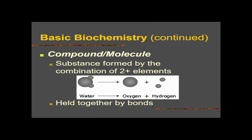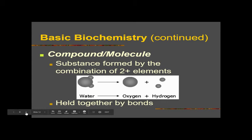Now we can combine atoms together, and when we do that we end up with a compound or a molecule. A compound or molecule is a combination of two or more elements. Water is one of the most important molecules in living things, made of two different kinds of elements — oxygen and hydrogen — held together by bonds. The chemical formula of water, H2O, tells us we have two hydrogen atoms and one oxygen atom.